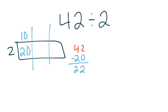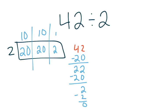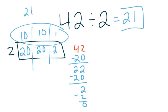Maybe you do another 2 times 10 to get another 20. Take that 20 away, you'd be left with 2, and then 2 times 1 would give you 2. Take that 2 away, and you'd be left with 0. In order to get your quotient, you would add all of those pieces together. 10 plus 10 plus 1 would give you 21 as your quotient, or as the answer to your division problem.